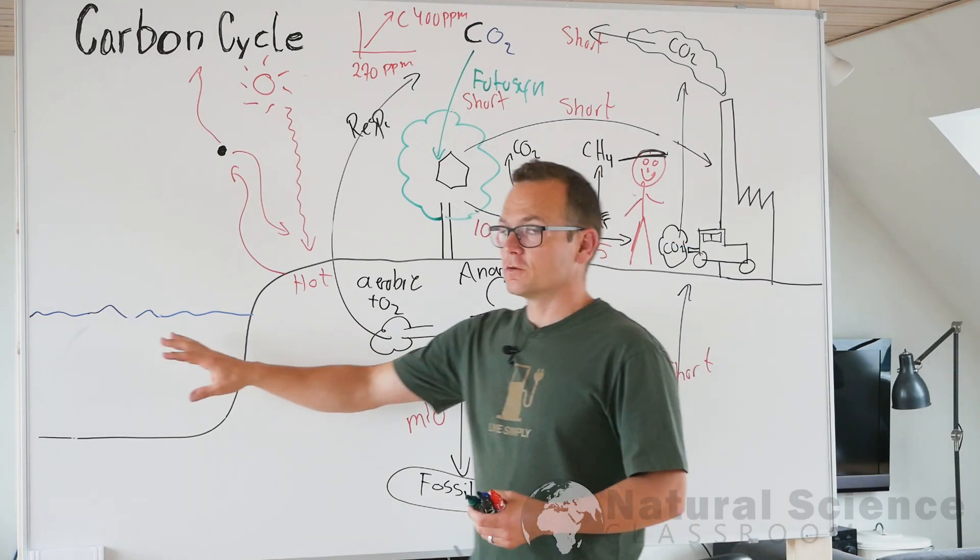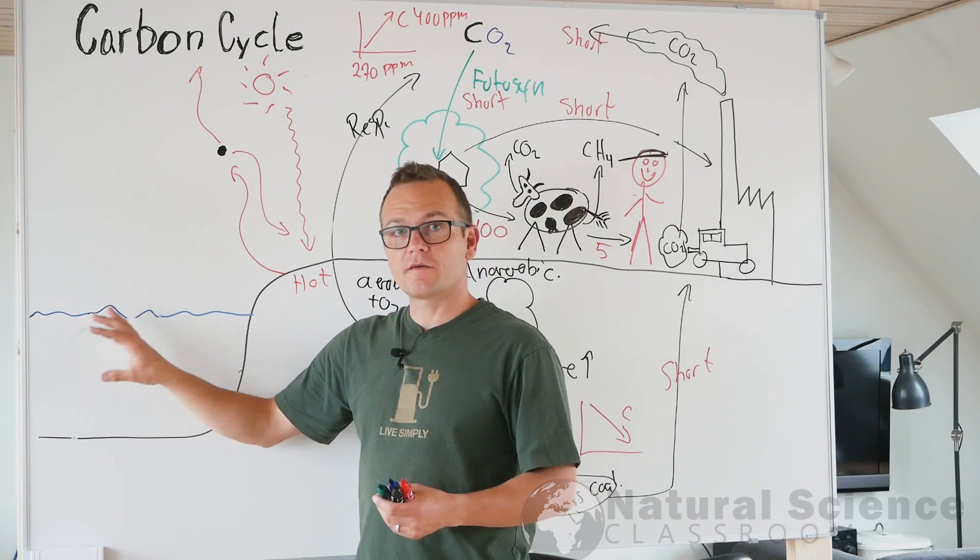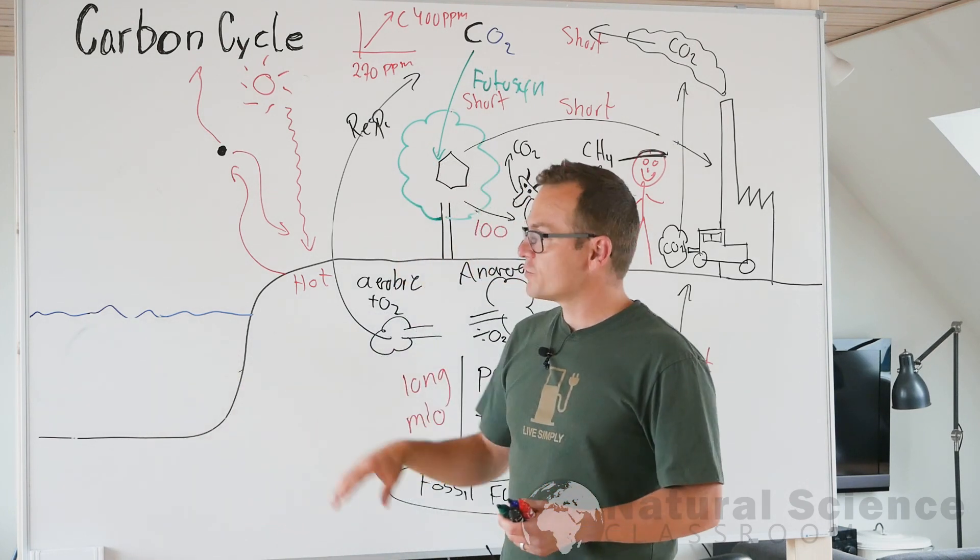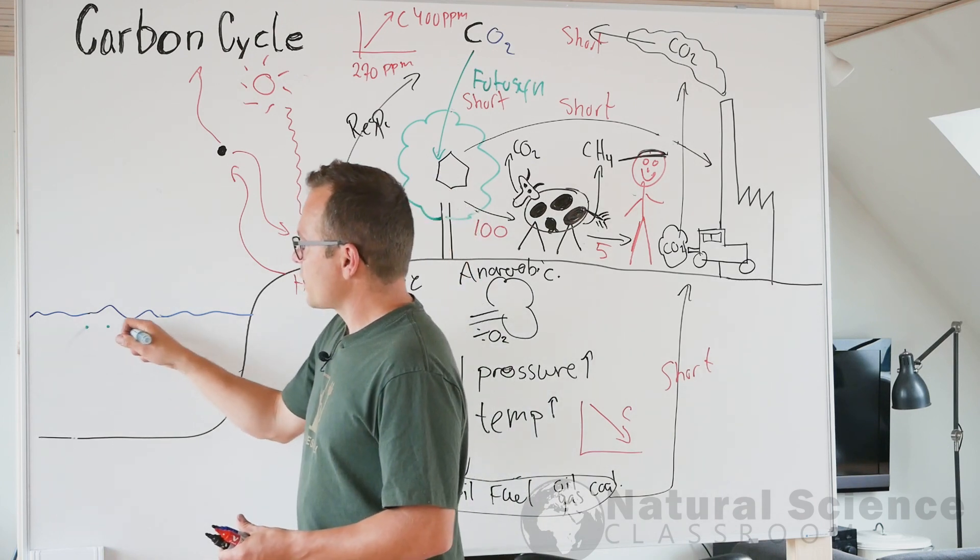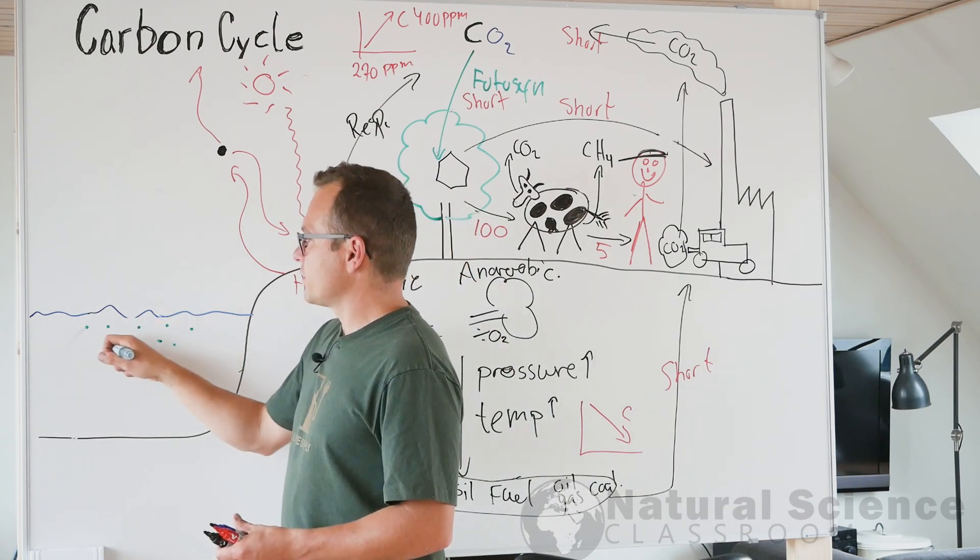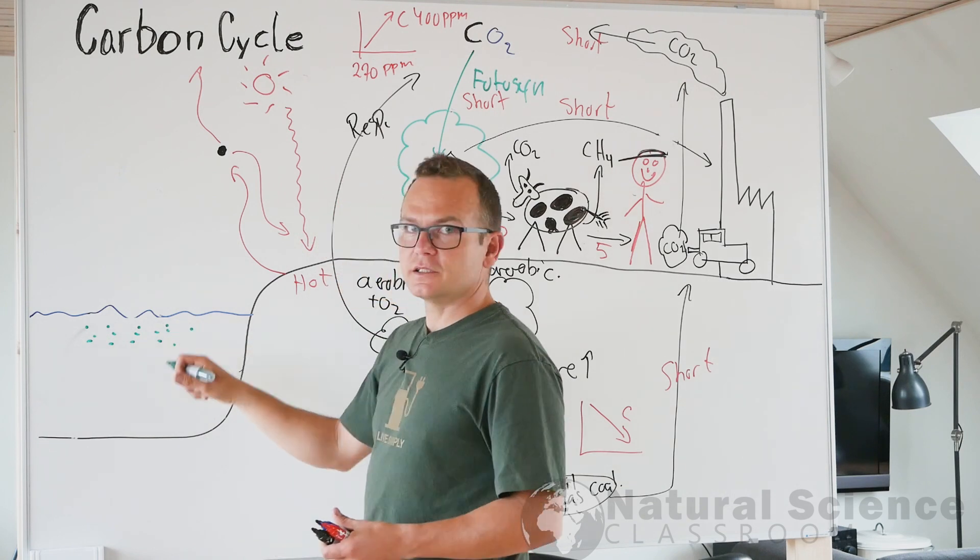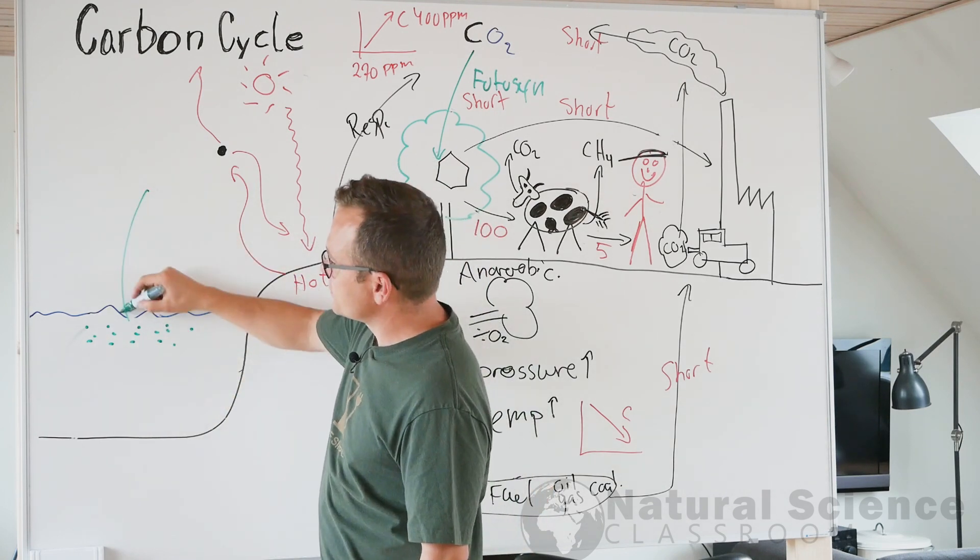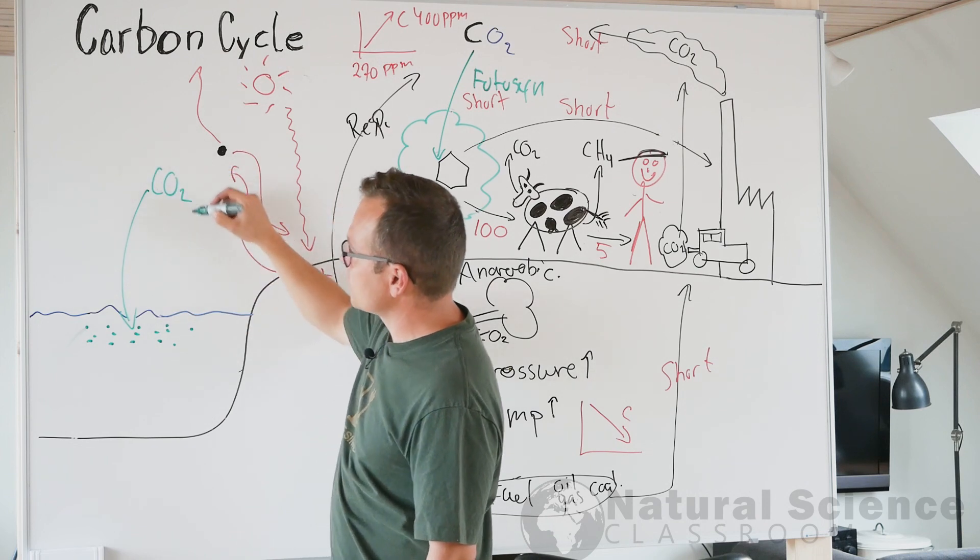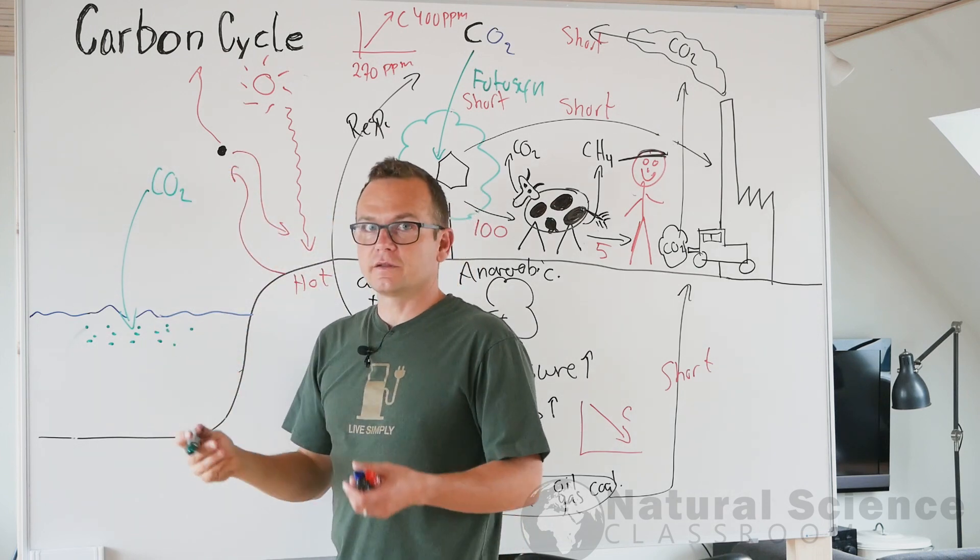So over here I've got the ocean, right? The ocean is really important when it comes to the carbon cycle. Because we've got these tiny plants floating around in the entire ocean. These are algaes or plankton. And these algaes, they will absorb CO2 in the photosynthesis as well and build carbon into their plant cells.